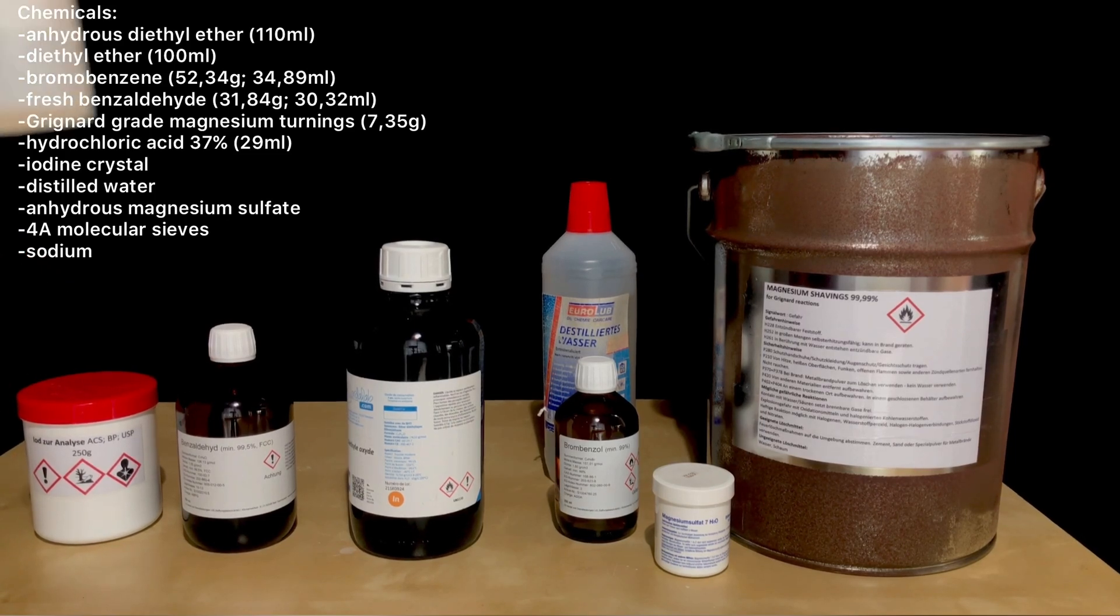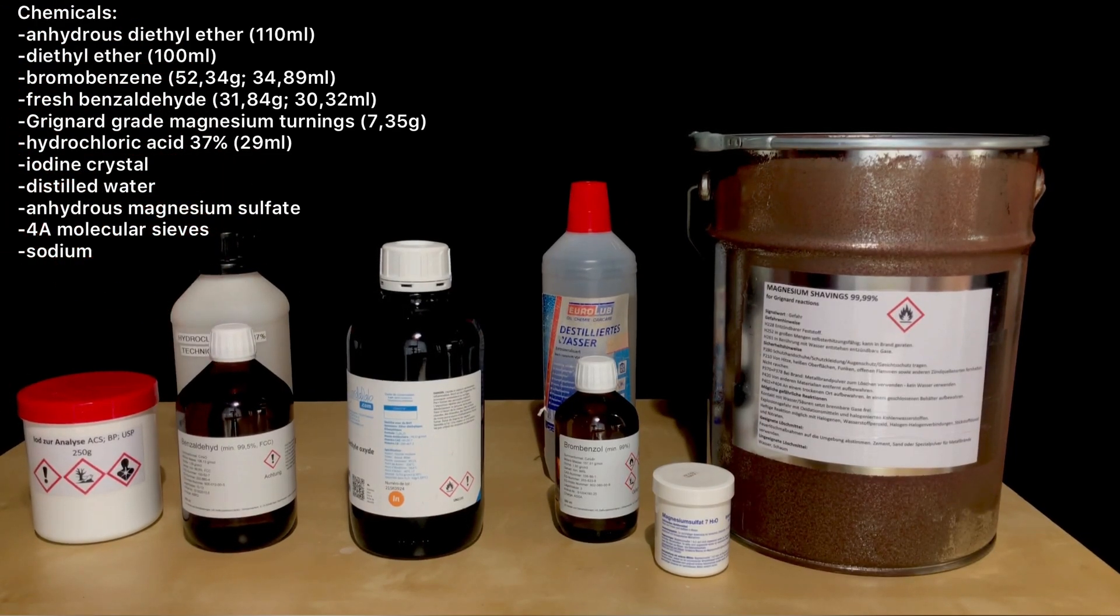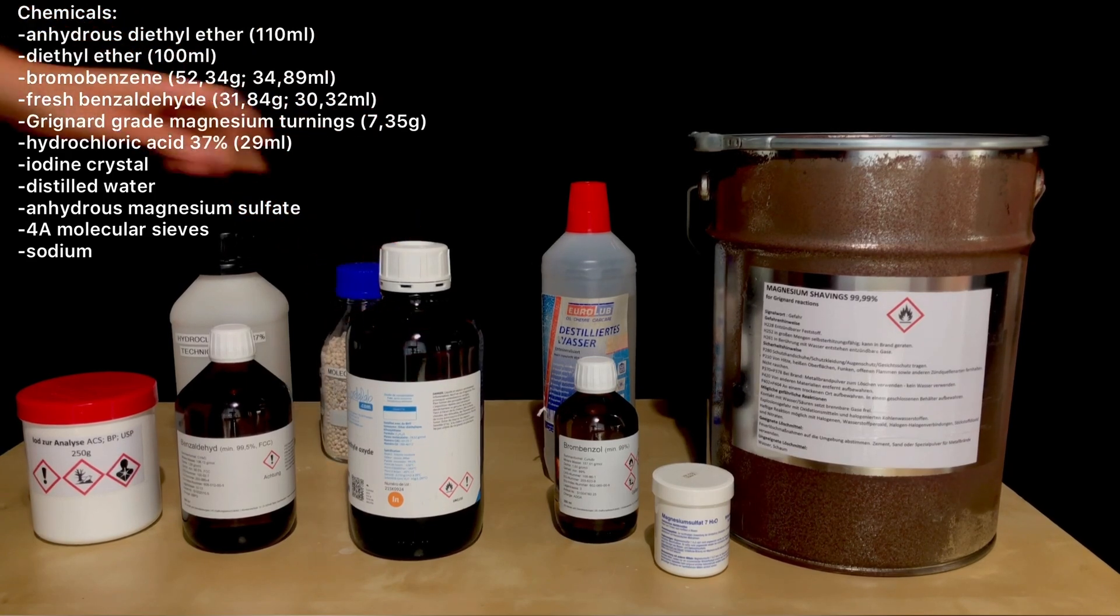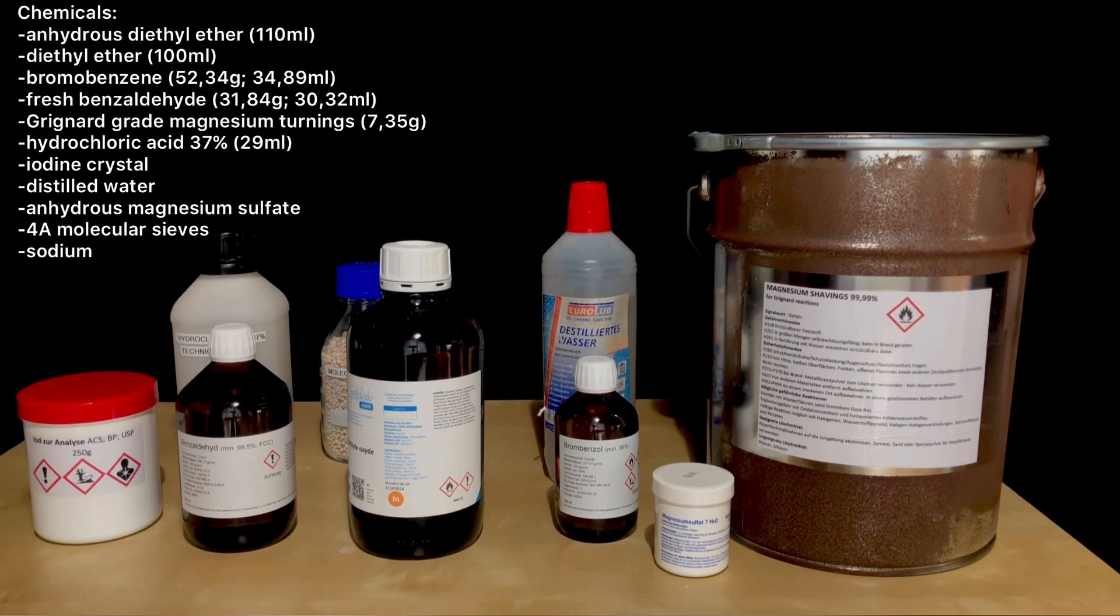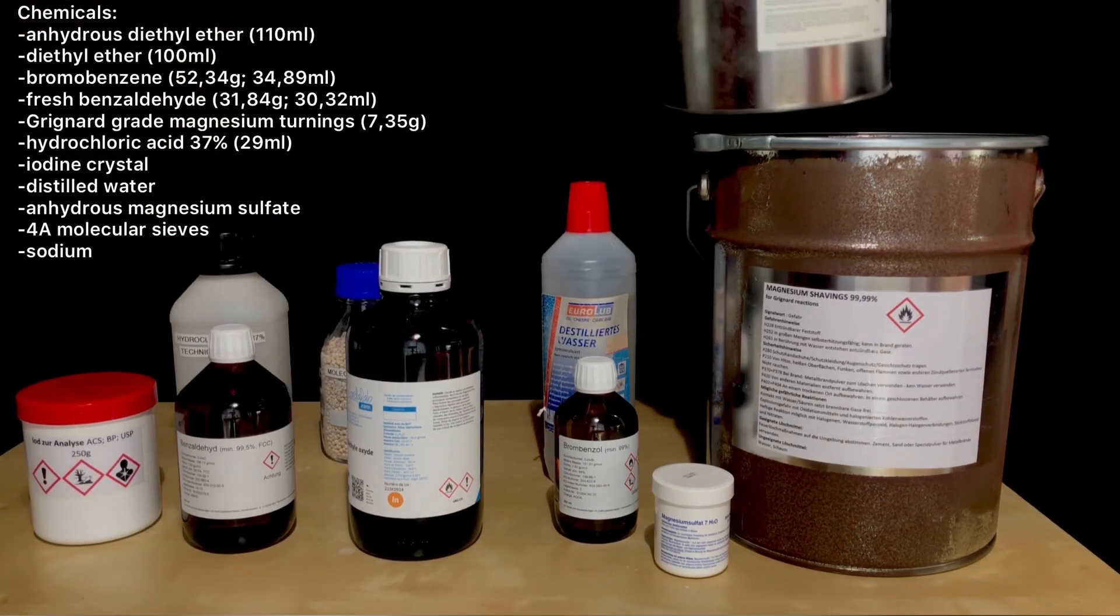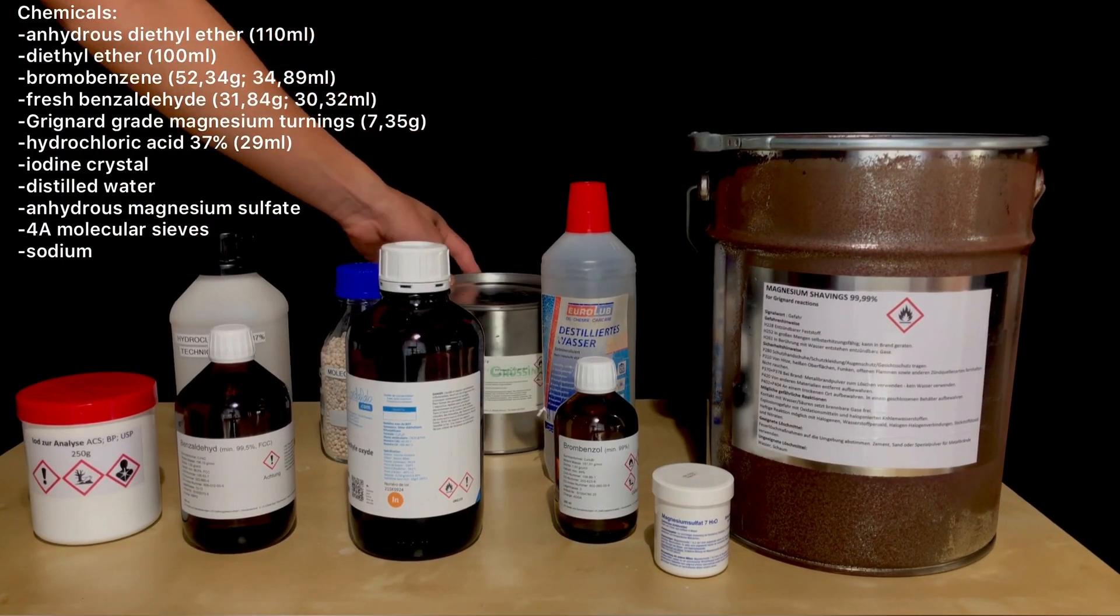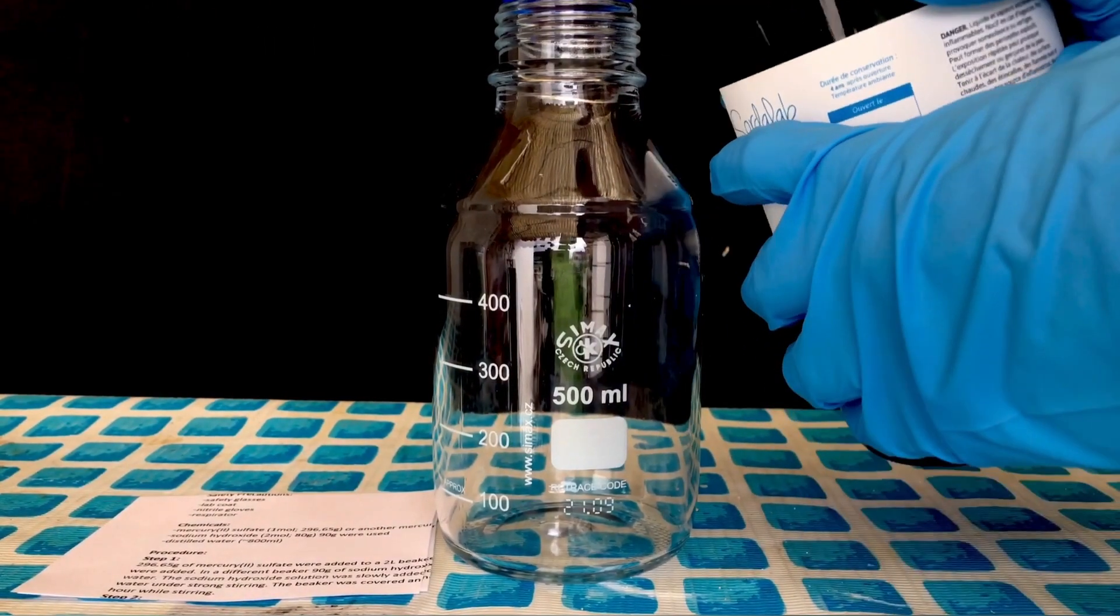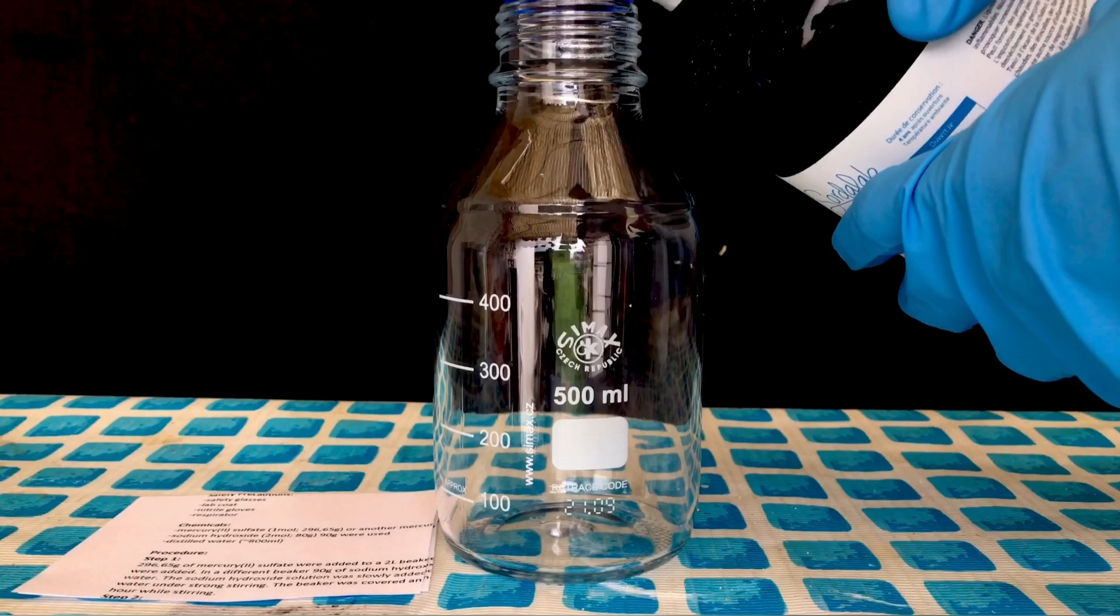If you look carefully, you can see that I only placed one bottle of diethyl ether down. Well, because we still need some anhydrous diethyl ether and because we need to dry the bromobenzene, we are going to use molecular sieves for the bromobenzene and sodium metal for the 110 milliliters of diethyl ether.